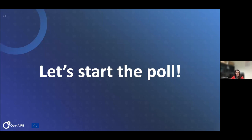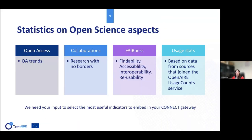I think you can start the poll now. There will be a few questions I kindly ask you to fill in. The first question is about the categories of indicators: which category do you think is most useful to give an overview of the open science maturity and trends of your community? You can select at most two options. I see still zero — okay, now we're starting. Yes, you've already started to answer.